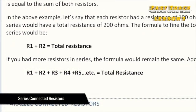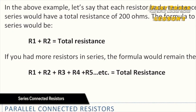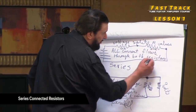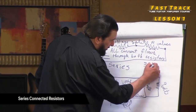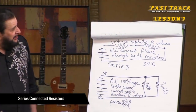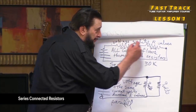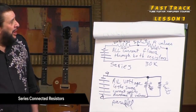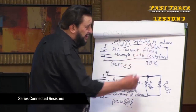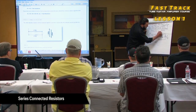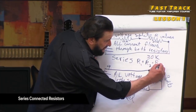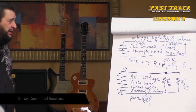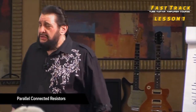For series resistors, you simply add them together. If this is a 10k resistor and this is a 20k resistor, the total is 30k — so the battery acts as if it's operating into a 30k resistor. All current going through one goes through the other. The formula is: R1 + R2 (plus R3, etc.) equals R total.